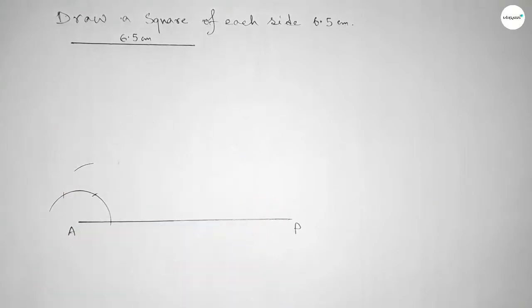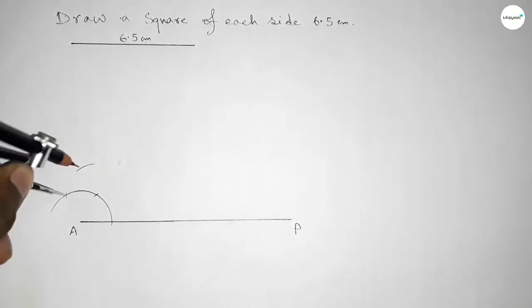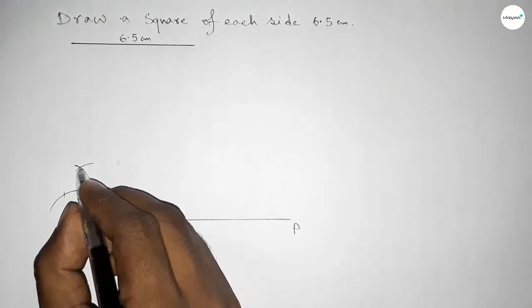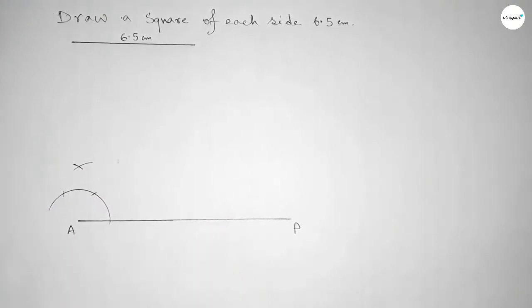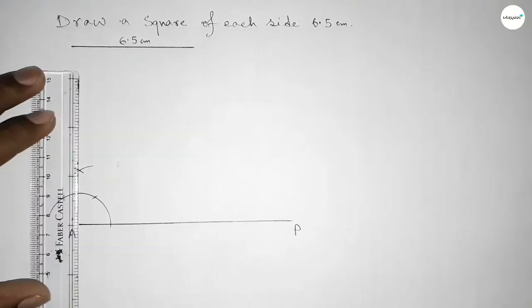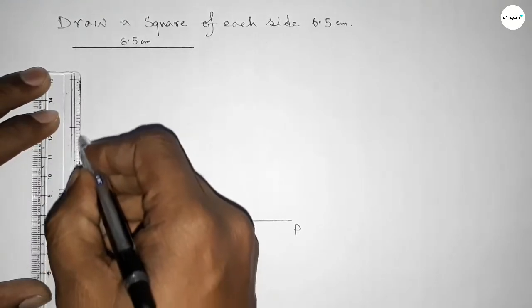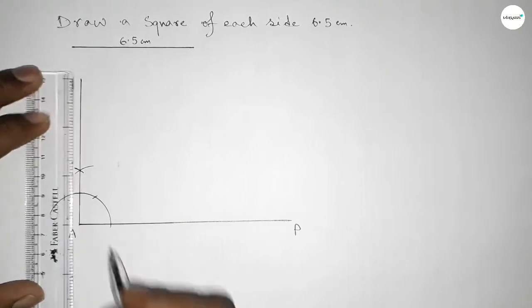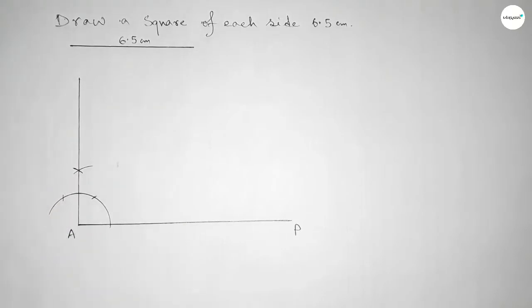With the same length, place the compass and cut here, then draw an arc again with the same length. Both curves intersect at a point. Join this point to get a 90-degree angle at point A.